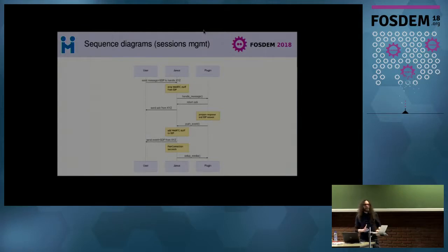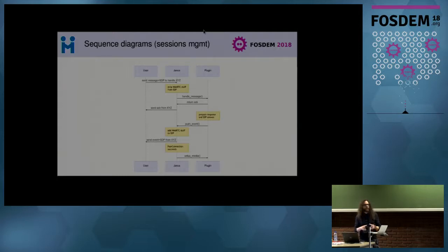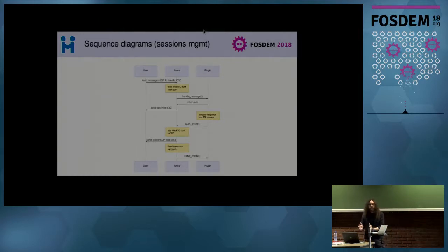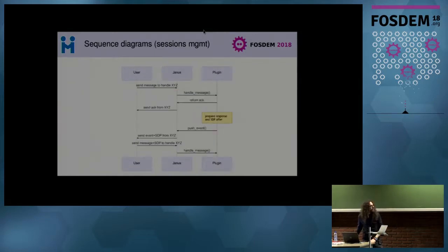Asynchronous messaging is particularly important because it also handles WebRTC negotiation. SDP offers and answers are involved — plugins are responsible for preparing those SDP offers and answers depending on who originates the session. Maybe a user sends an offer, it gets to the plugin, the core passes it to the WebRTC stack, gives you a bare-bones SDP, and the plugin prepares an answer and sends it back.